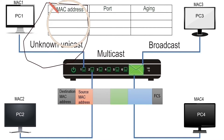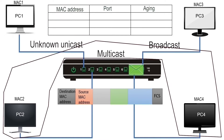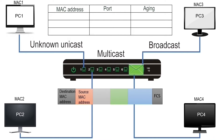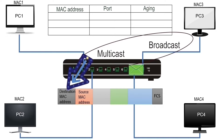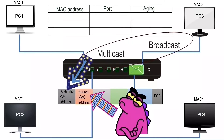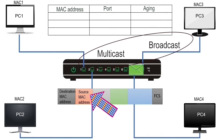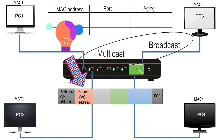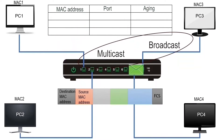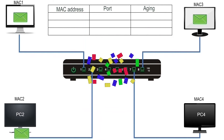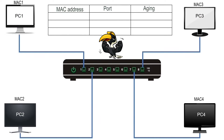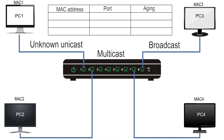An unknown unicast address is an address that is not available in the CAM table. A multicast address belongs to a group of devices. A broadcast address belongs to all devices on the local network. Multicast and broadcast are destination-only addresses; these addresses are never used in the source address field of a frame. Since a switch uses the frame's source field to learn addresses, it never learns about multicast or broadcast addresses. These addresses always remain unknown to the switch, so a switch always floods a frame having an unknown unicast, multicast, or broadcast address in the destination address field.